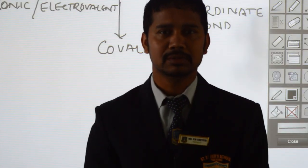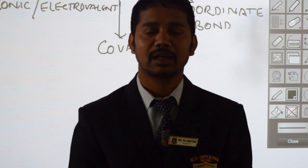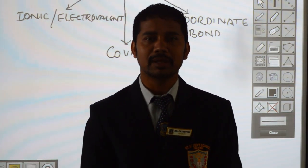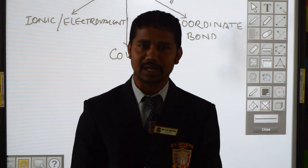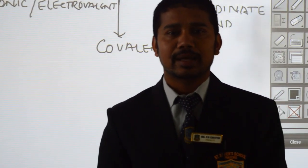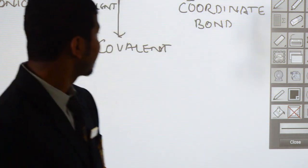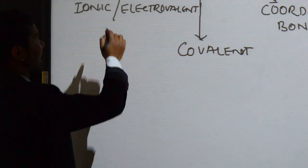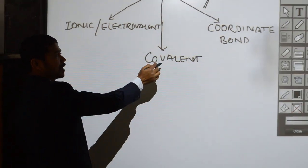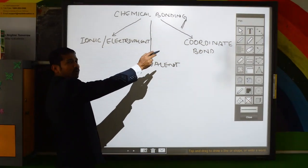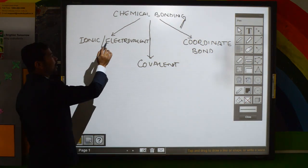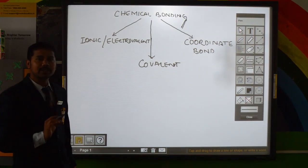Good morning dear students. This is the continuation of Chapter 2, Chemical Bonding. There are three types of chemical bonds: ionic or electrovalent bonds, covalent bonds, and coordinate bonds.